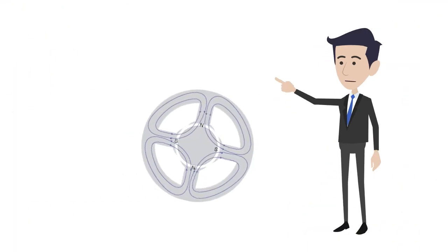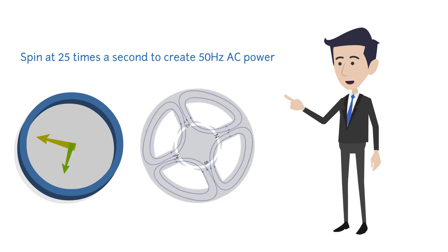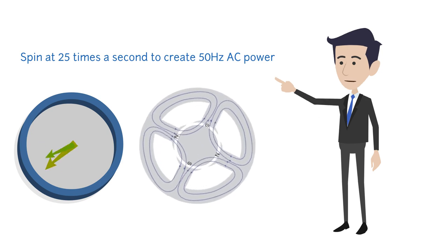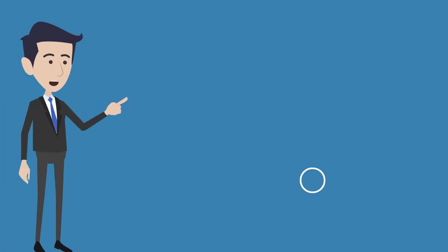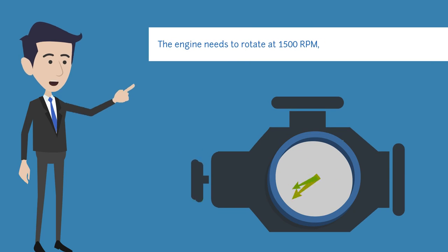A 4-pole machine therefore only needs to spin it 25 times a second to create 50 Hz AC power. With 60 seconds in a minute, the engine needs to rotate at 1500 RPM, or 1800 RPM for 60 Hz.